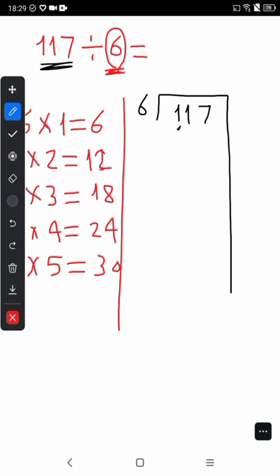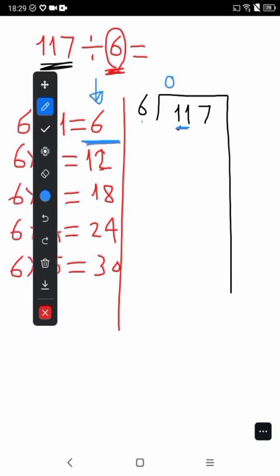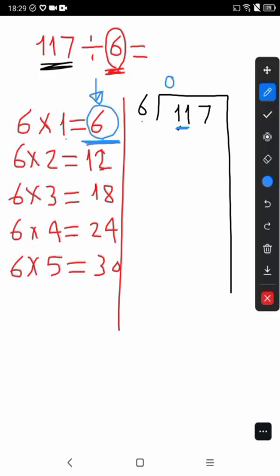We start with the first digit. Check: is 1 greater than 6? No. We will write 0 and take one digit. We have 11. Is 11 greater than 6? Yes. Search for 11. 11 is between 6 and 12, take the smallest, circle it. Write 1 up, minus 6 down. We will subtract: 11 minus 6 is 5. And we have 7, drop the 7 to get 57.